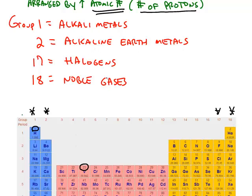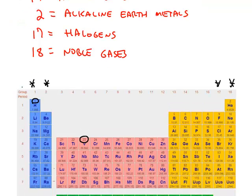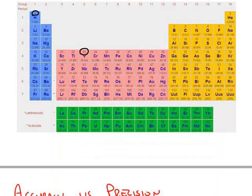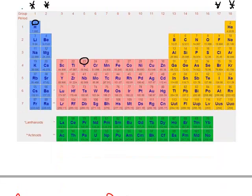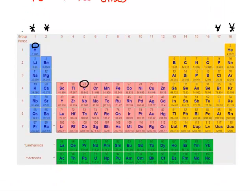Groups 17 and 18 — 17 are the halogens, things like fluorine, chlorine, bromine, and so on. 18 are the noble gases. So you should remember those four names of the groups on the periodic table.